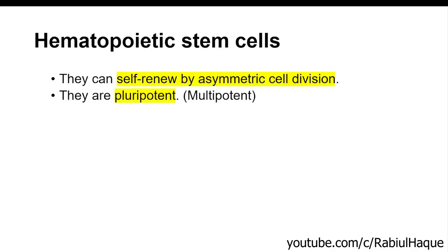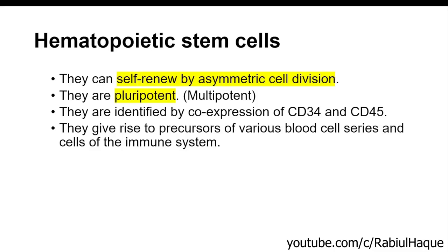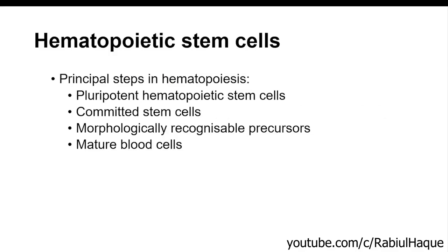Hematopoietic stem cells are also called pluripotent or multipotent because they have the potential to differentiate into many types of blood cells. They can be identified by co-expression of CD34 and CD45. Hematopoietic stem cells give rise to precursors of various blood cell series and also to cells of the immune system. From the pluripotent hematopoietic stem cells, we get committed stem cells, then morphologically recognizable precursors, and ultimately mature blood cells are formed.